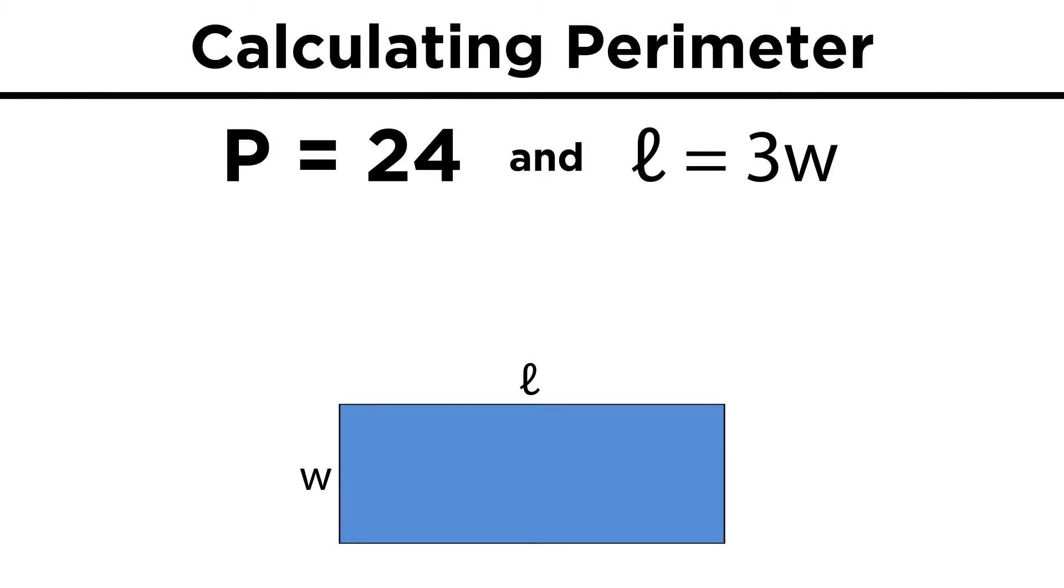Sometimes we may be given a perimeter problem that we can do algebra with. Say we have a rectangle with a perimeter of twenty-four, and its length is three times its width. What are the dimensions of the rectangle? Well we know that two L plus two W must equal twenty-four. We also know that L equals three W. Remember how to solve two equations with two unknowns by substitution? Let's put three W in place of L in this equation, which gives us six W plus two W, or eight W, equals twenty-four. We divide by eight, W must be three, and therefore L must be nine. The rectangle is three by nine.